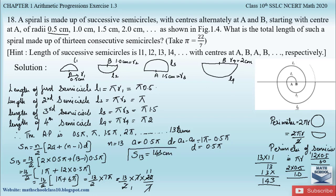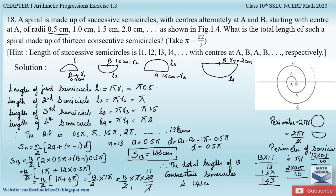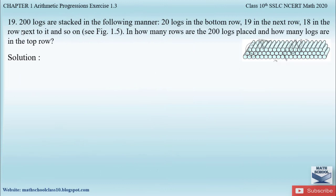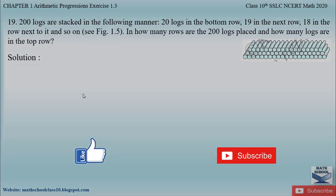So this is how we solve this problem. Therefore the total length of such a spiral made up of 13 consecutive semicircles is 143 centimeters. If you have any doubts please comment below. In my next video I will be solving question number 19 from exercise 1.3, chapter 1, Arithmetic Progressions. Please like my video and subscribe to my channel. Thank you.